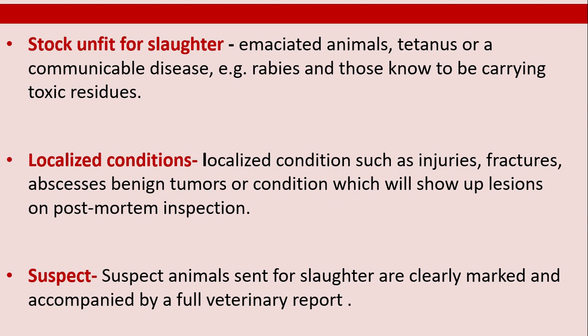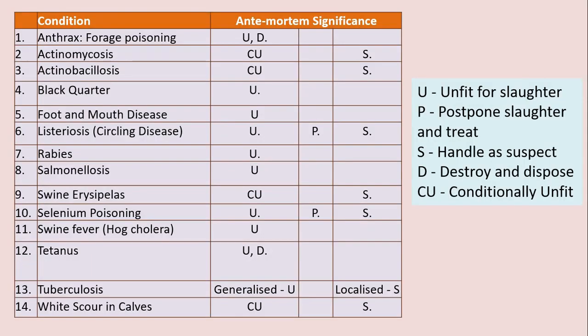Localized conditions such as injuries, fractures, abscesses, benign tumors, or conditions that will show up as lesions on post-mortem inspection are also classified. Suspect animals sent for slaughter are clearly marked and accompanied by a full veterinary report. This is the chart showing the condition and anti-mortem significance.